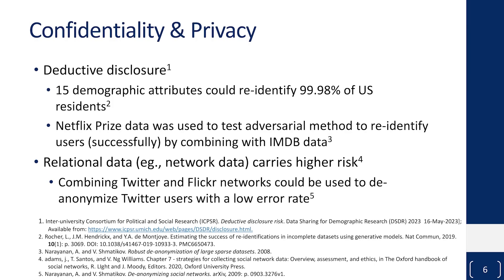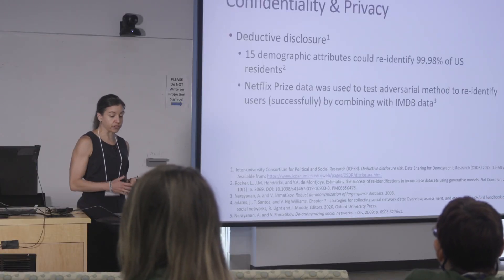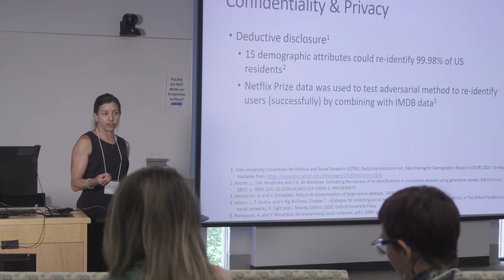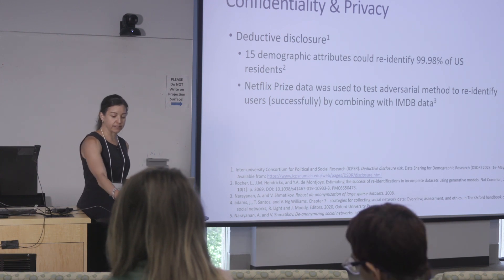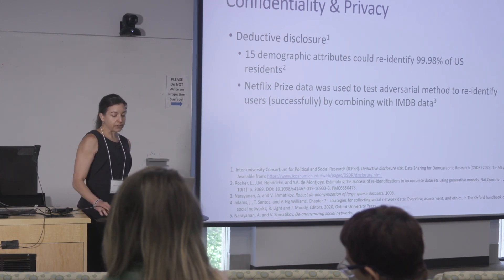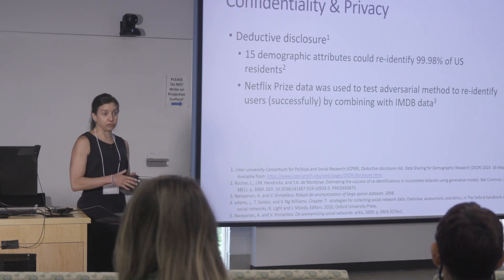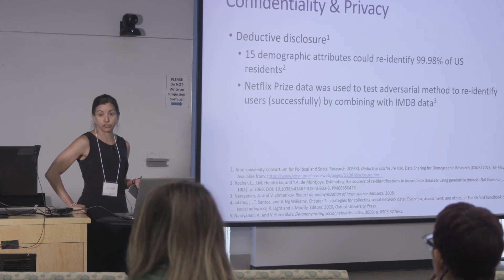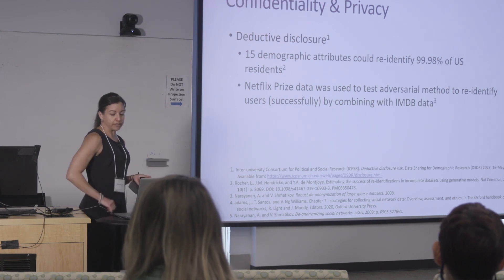If you're not familiar with the concept of deductive disclosure, the ICPSR link at the bottom is an excellent resource for data sharing in general. Deductive disclosure is when a combination of not-singly-identifying attributes can be combined to re-identify someone in your dataset. For example, combining 15 different demographic attributes — considered aggregate data in a table — would effectively identify every single US citizen, even without a single identifier. That's described in the second citation.